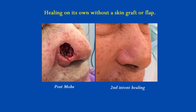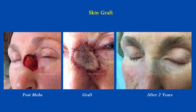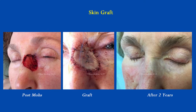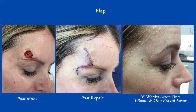The defect after Mohs surgery is sometimes allowed to heal with antibacterial ointment, or sewn together, or sometimes a skin graft or what's called a skin flap is done.